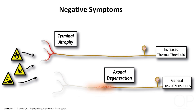In both of these cases there is disruption of the continuity of the nerve fibre with its target and consequently there is a loss of sensitivity. In the case of terminal atrophy in patients with peripheral neuropathy, there may be an increase in the threshold to evoke a heat pain response. With axonal degeneration, the loss of sensitivity is generally more dramatic and will depend on which sets of fibres are lost, but there may be a general loss of sensation.